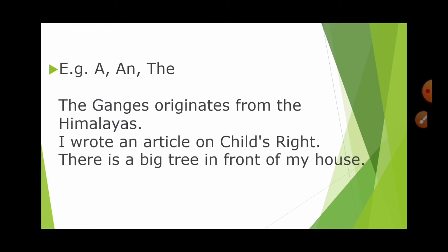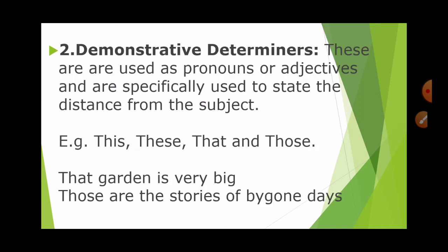Examples of articles: 'The Ganga originated from the Himalayas' — here 'the' is the definite article prefixed before the noun. 'I wrote an article on child's rights' — here 'an' is used. 'There is a big tree in front of my house' — here 'a' is used.